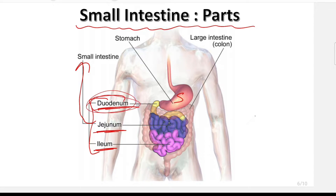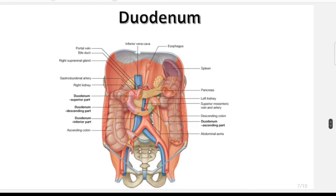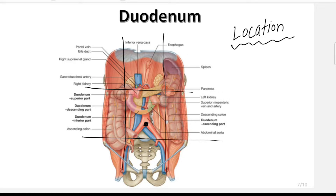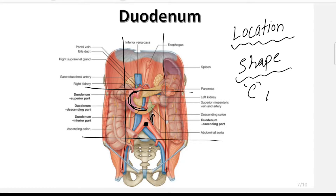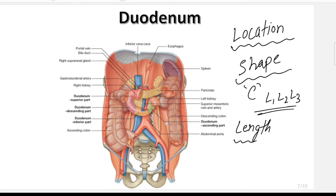In this video we are going to cover only the duodenum. Before starting any organ, we should know its location. Drawing these lines, we can see the location relative to the umbilicus — the duodenum lies in the abdominal cavity above the level of the umbilicus. The shape of this organ is C-shaped, and it lies opposite to the L1, L2, and L3 vertebrae.